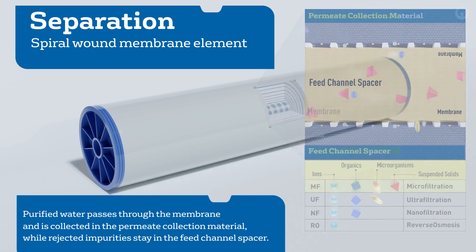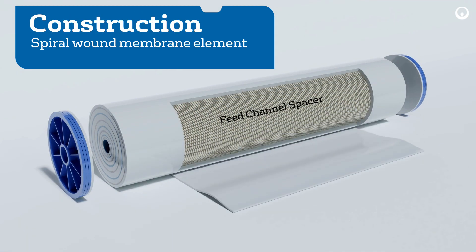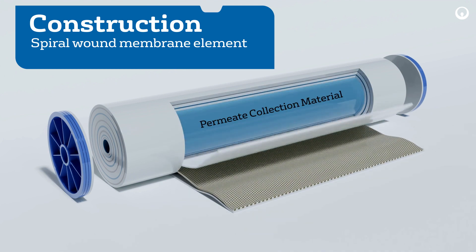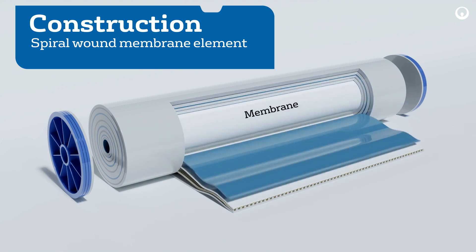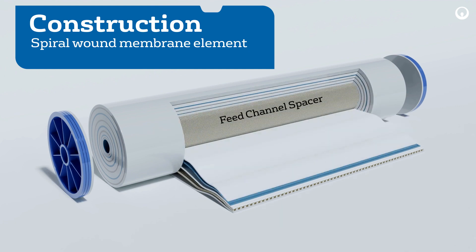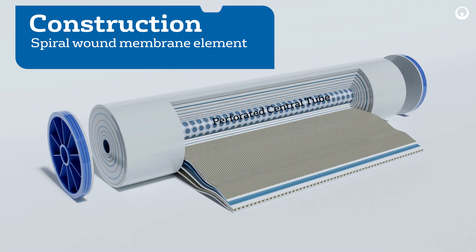In terms of construction, there are three materials rolled into an element: the feed channel spacer, the membrane, and the permeate collection material. They are assembled to make a barrier between the permeate and the concentrate. These membrane barriers are wound in a spiral around a perforated central tube.